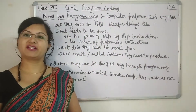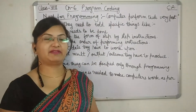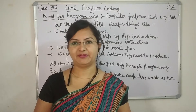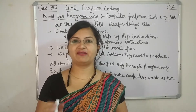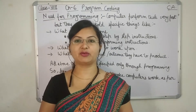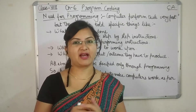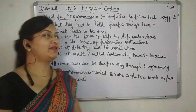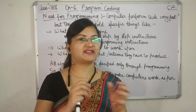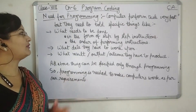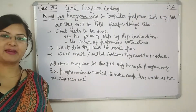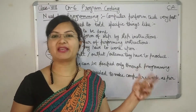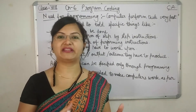Now we will discuss the need for programming. A computer is a machine that has made our work easier and performs tasks very fast, but it does not do anything on its own. We need to tell it specific things. To solve a problem, we follow steps — the same steps discussed in the previous chapter on algorithms, because algorithms are the first step to writing a program.